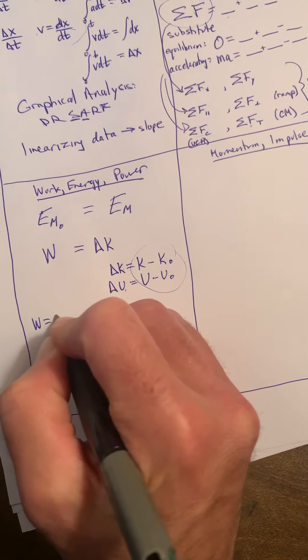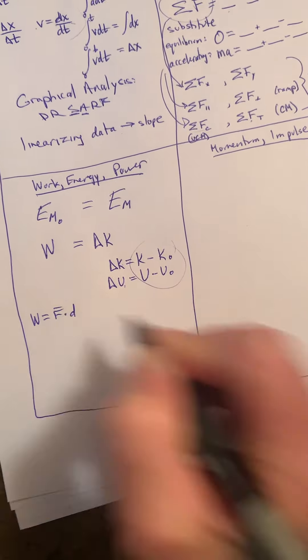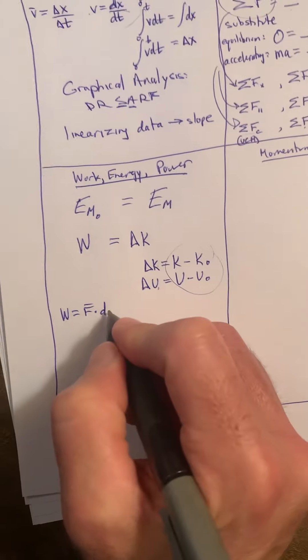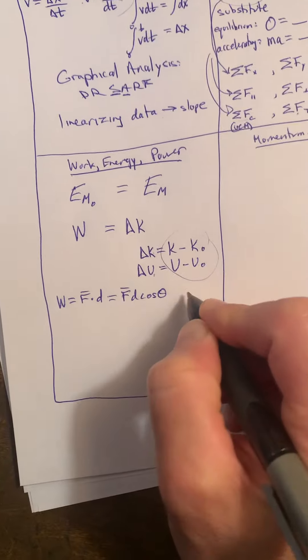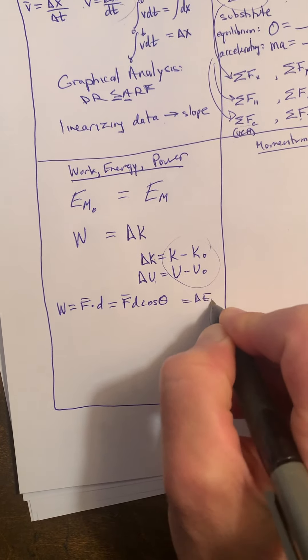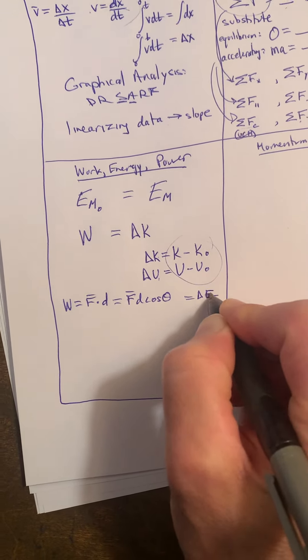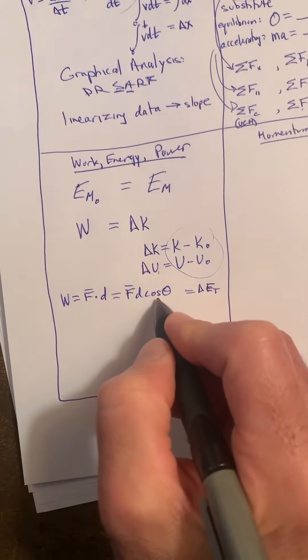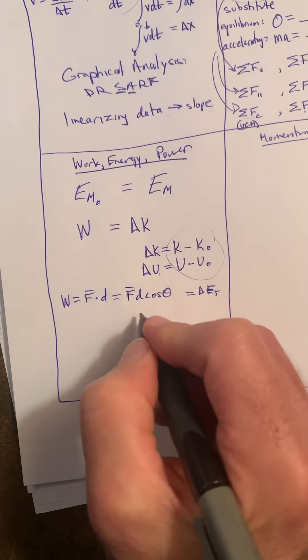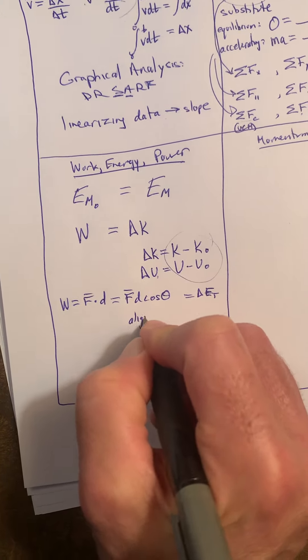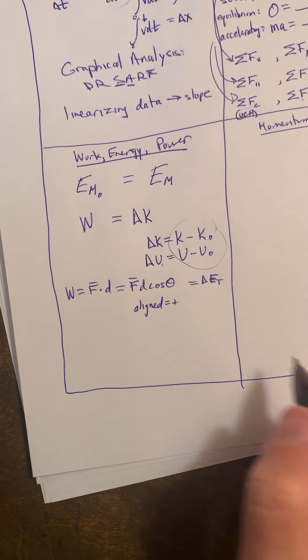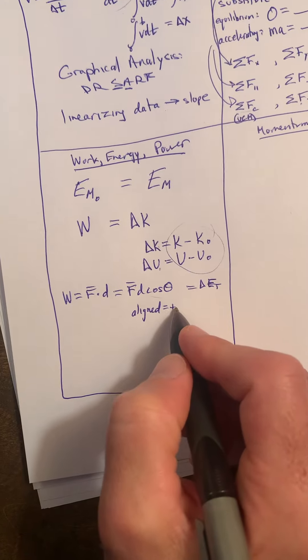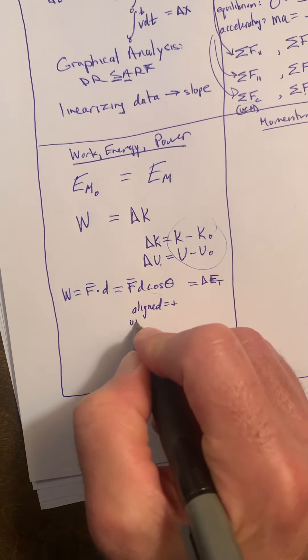Work, we knew back from Regents, was this dot product: average force times d, which meant Fd cos θ. We also said that was a change in total energy from Regents. But beware, this cosine theta term was basically an alignment term. If F and d are aligned, this came out to positive, fully aligned at zero degrees, it came out to positive one. If they were unaligned, like at 90 degrees to each other, then the work term came out to zero.